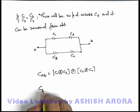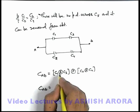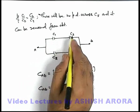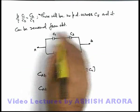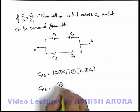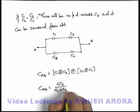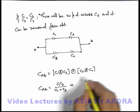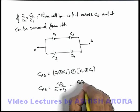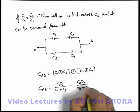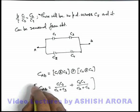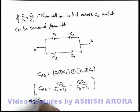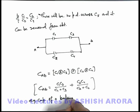And for series combination here we can directly write down the results like if C1 and C3 are in series, their equivalent can be written as C1 C3 by C1 plus C3, plus for parallel combination we can write it C2 C4 by C2 plus C4. So this is the equivalent capacitance of a balanced Wheatstone Bridge.